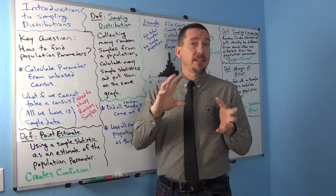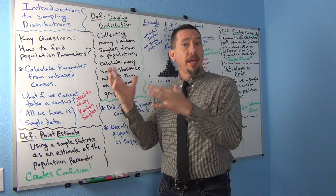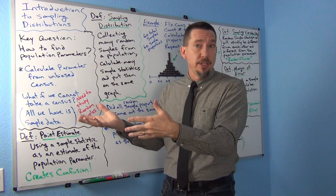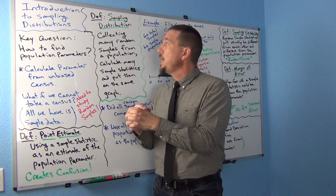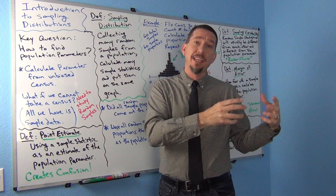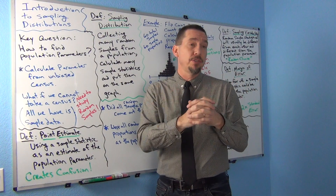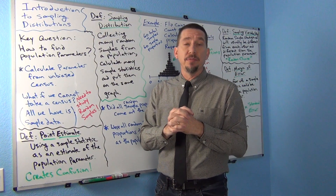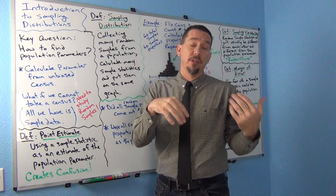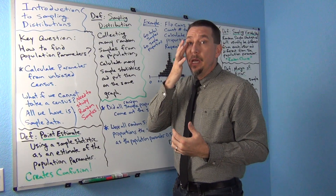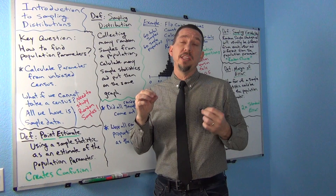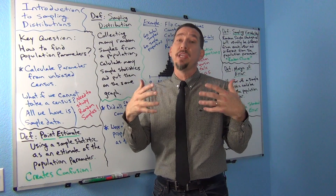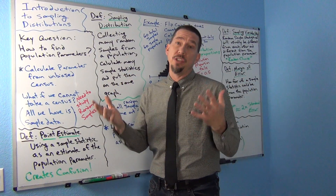In our last video we discussed that the term parameter refers to a population value, like a population mean or a population standard deviation, while a statistic refers to a sample value — a number calculated from sample data like a sample mean or a sample standard deviation. So the question in this unit is really how do we estimate population parameters?